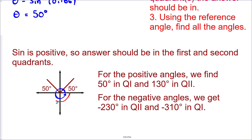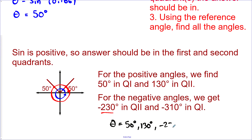Our domain restriction also allows us to go from 0° to −360°. Going back in the negative direction, we find two more solutions: negative 180° − 50° = −230°, and negative 360° + 50° = −310°. So given our domain restrictions, θ equals 50°, 130°, −230°, and −310° — four solutions total.